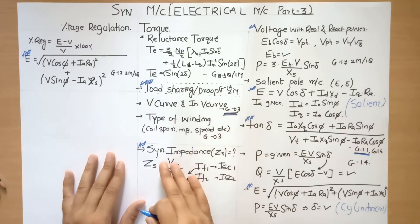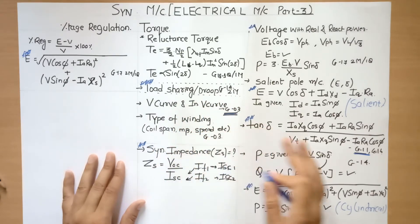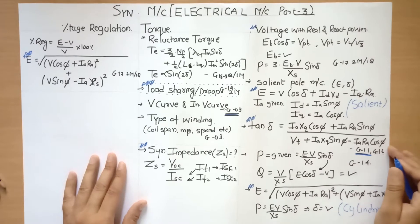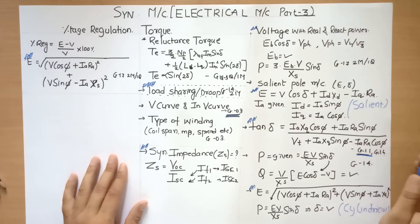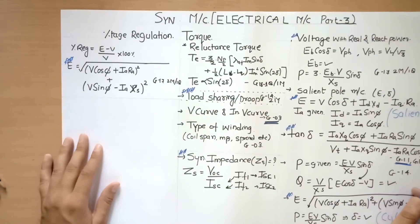Load sharing droop and Synchronous Impedance. These are the major topics that have been covered in all gate papers since 2003. Let us see one by one how questions can be asked and how they have been asked till now.